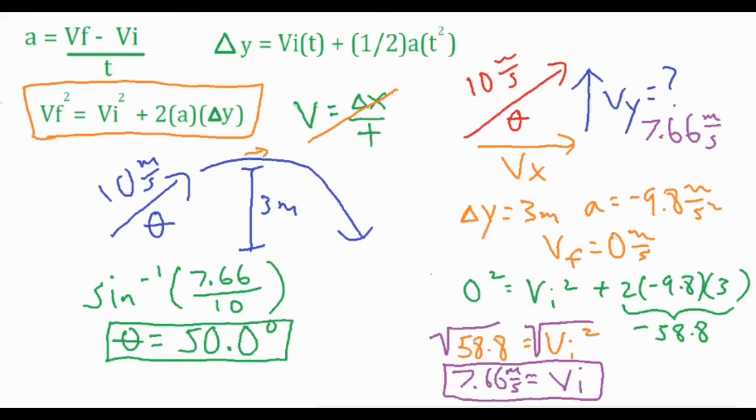So to sum things up, when you're solving for a problem like this, you want to find one of these pieces of your original triangle, either your horizontal or vertical component of your initial velocity.